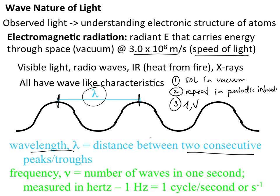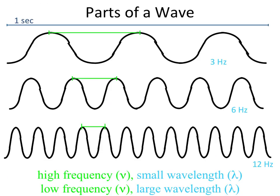Frequency is the number of waves that pass a specific point in a specific period of time, usually one second. They are usually measured in hertz or inverse seconds (s⁻¹). We've already discussed wavelength being the distance between two peaks on a wave.